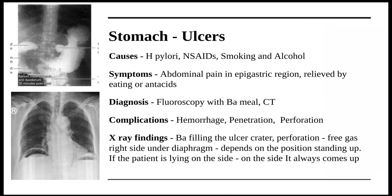Complications of stomach ulcers are hemorrhage, penetration, and perforation. Penetration refers to the spreading of the peptic ulcer into adjacent organs. X-ray findings show the crater of the ulcer filled with barium, as shown in the diagram. In perforation, free gas can accumulate under the diaphragm. On the left side there is a physiological gas bubble in the stomach, but accumulation of gas on the right side under the diaphragm is pathological and indicates a perforation in the gastrointestinal tract.